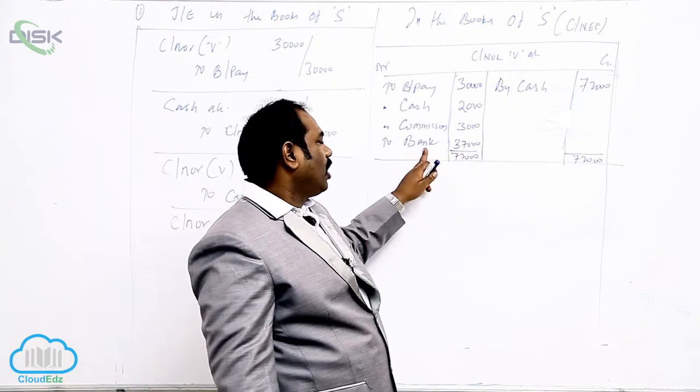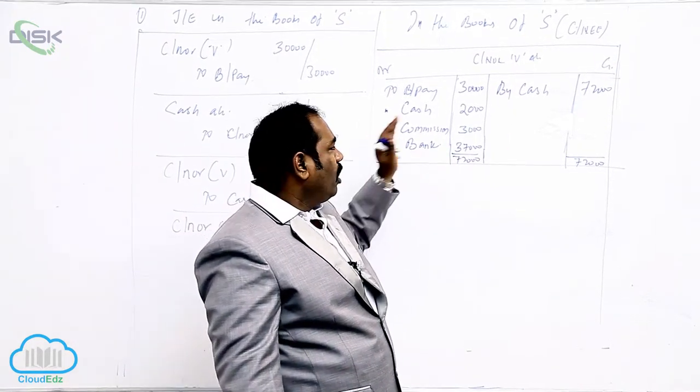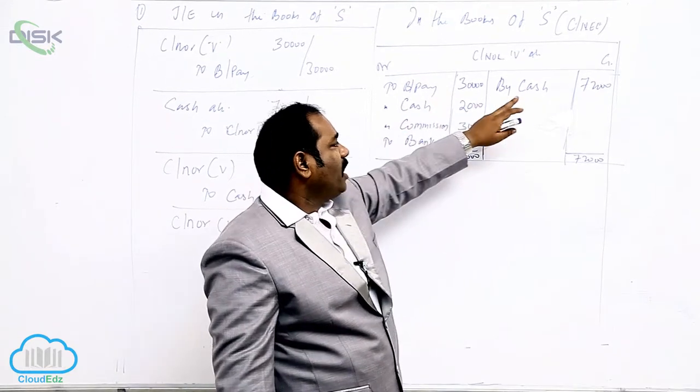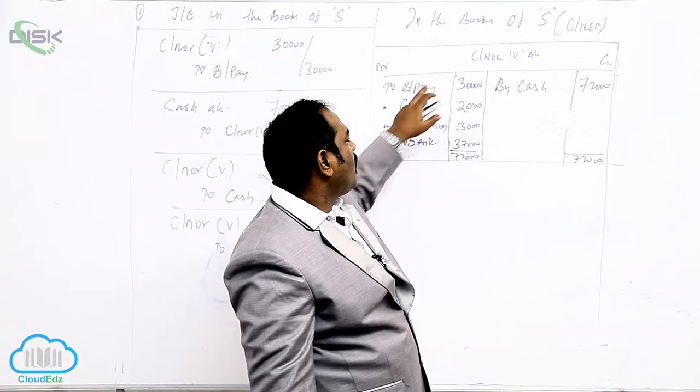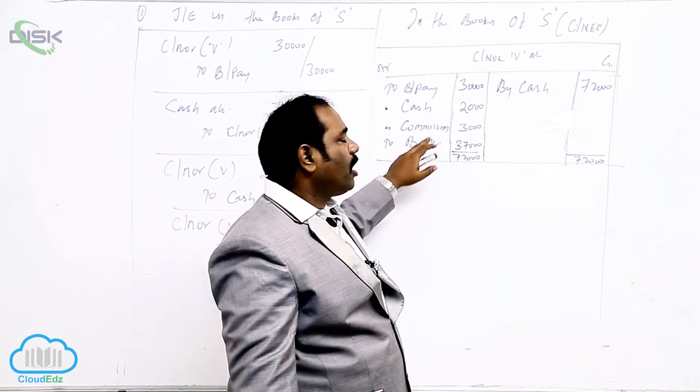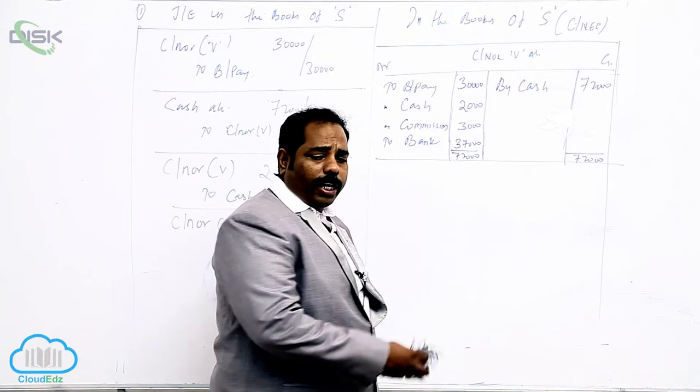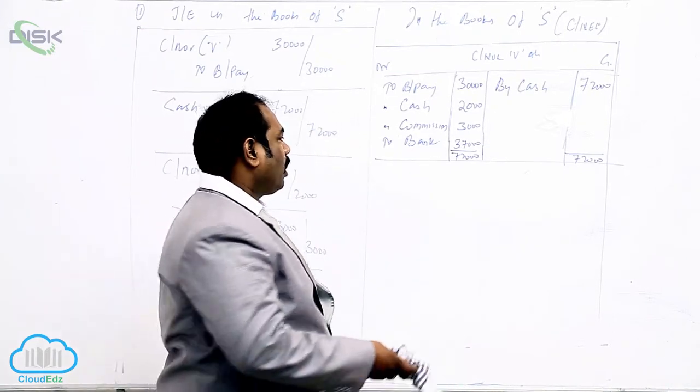And when you settle the account, when you close the balance, you get the balancing figure. So only if these are the entries which will come by seeing the ledger, also we can do journal. Cash to consignor, Kanzai to bills payable, Kanzai to cash, Kanzai to commission. So let me teach you directly with the ledger.